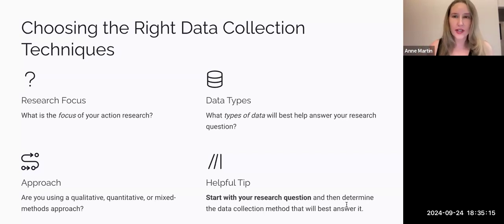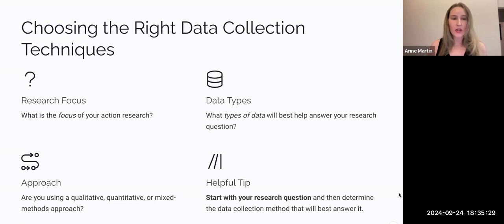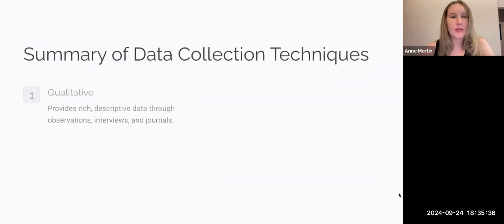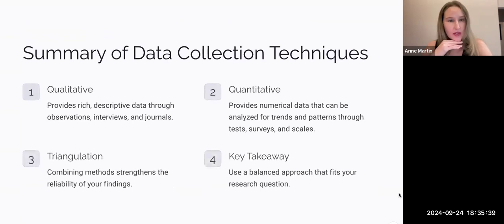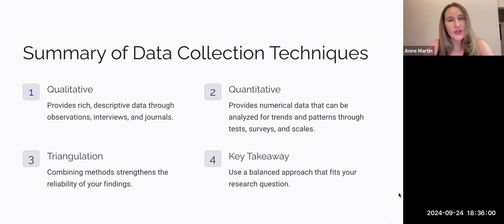So I know this was long — hopefully it's helpful. When choosing the right data collection technique, it needs to align with your research focus. Think about what types of data will help you answer your questions, and whether that's qualitative, quantitative, or mixed. Start with your research question and go from there. Try the triangulation matrix to help. Make sure you know the difference between qualitative and quantitative and can give examples for each, understand what triangulation means, have multiple data sources that can offer insight, and have a balanced approach. I'm looking forward to hearing your ideas for data collection as they relate to Chapter 5.